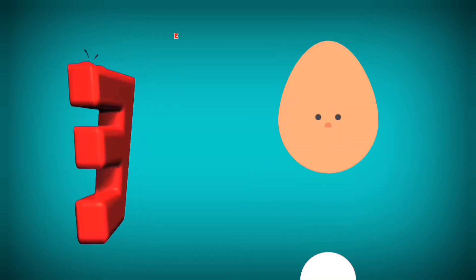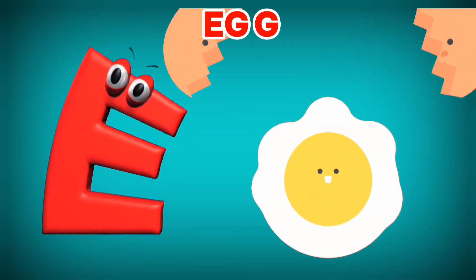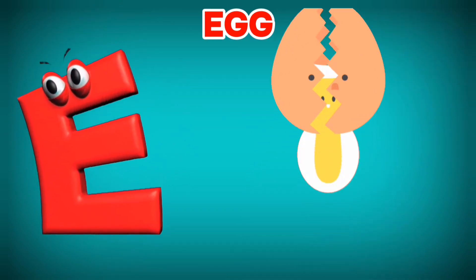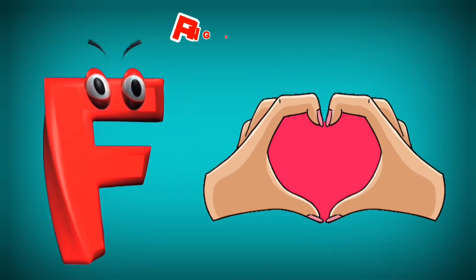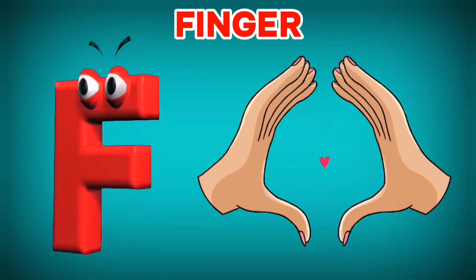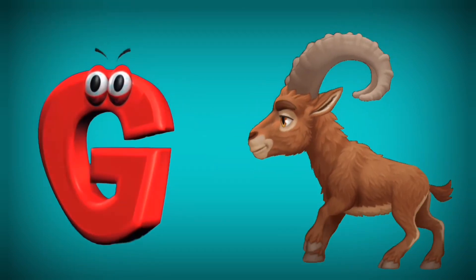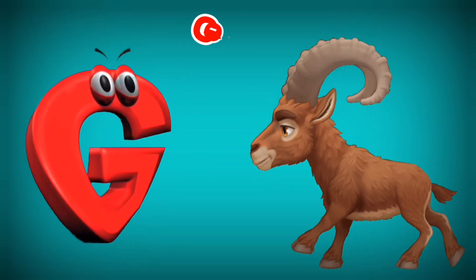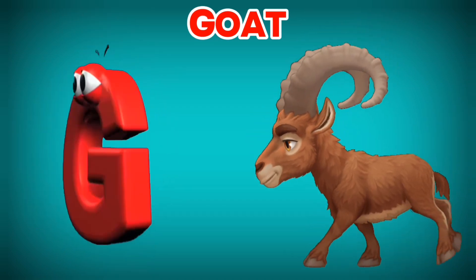Dolphin. E is for Egg. E, E. Egg. F is for Finger. F, F. Finger. G is for Goat. G, G.